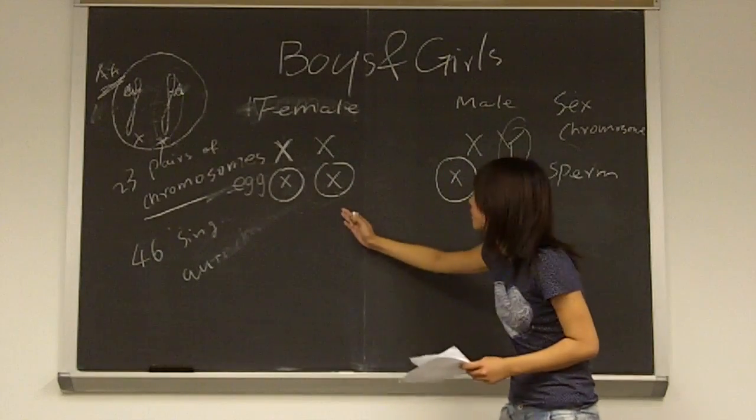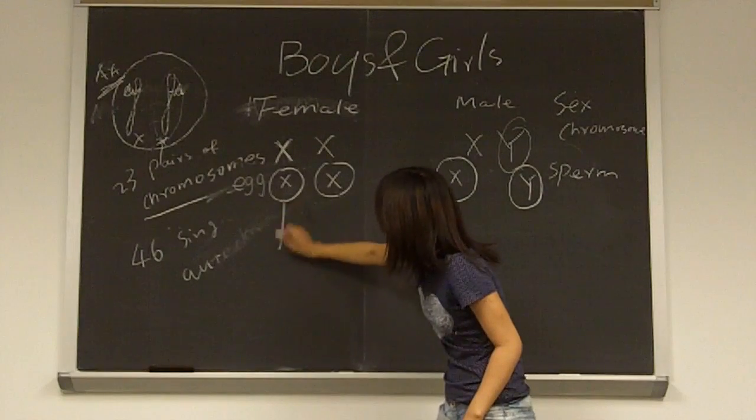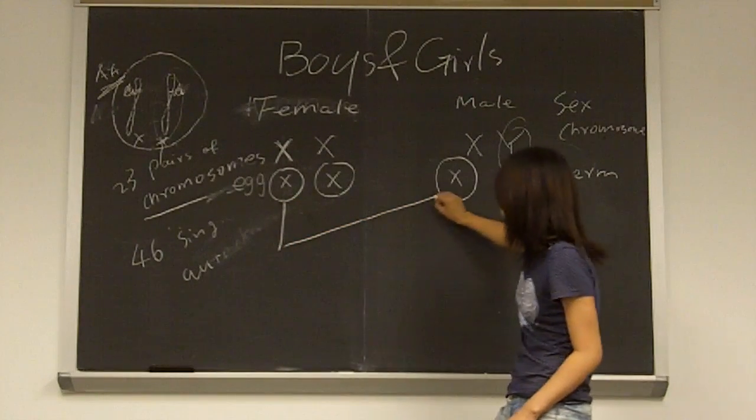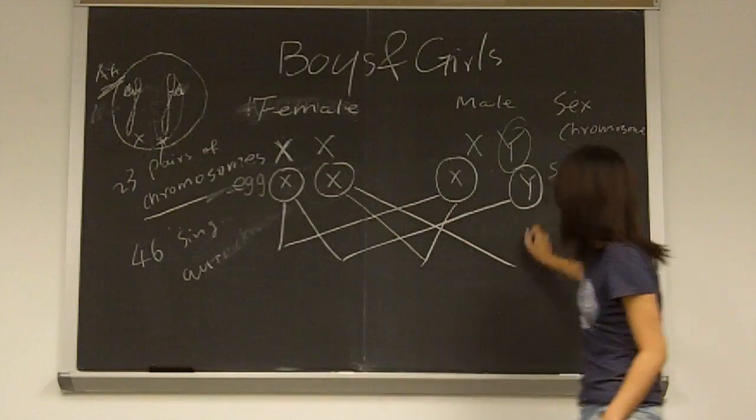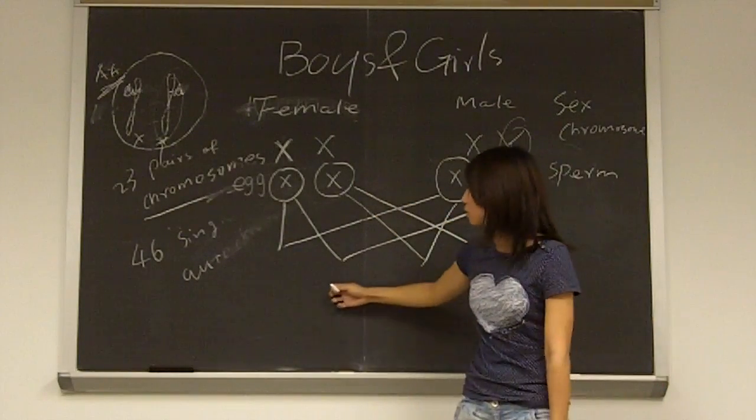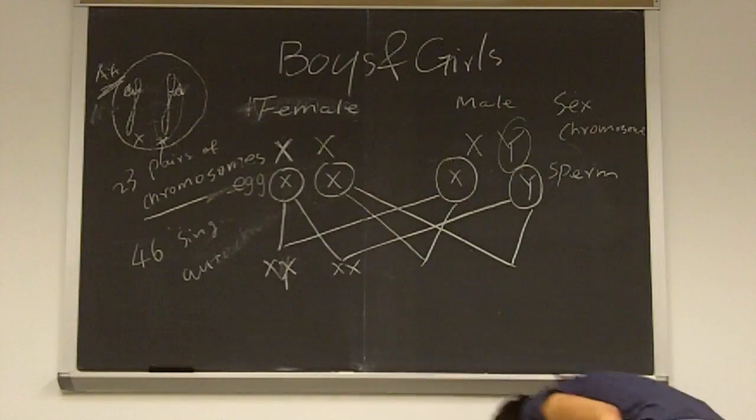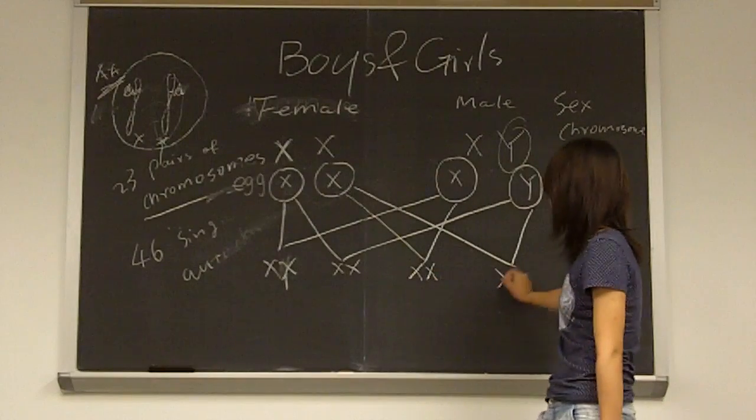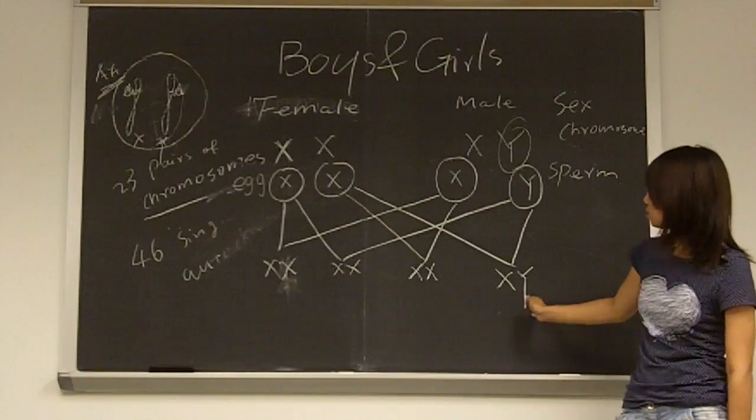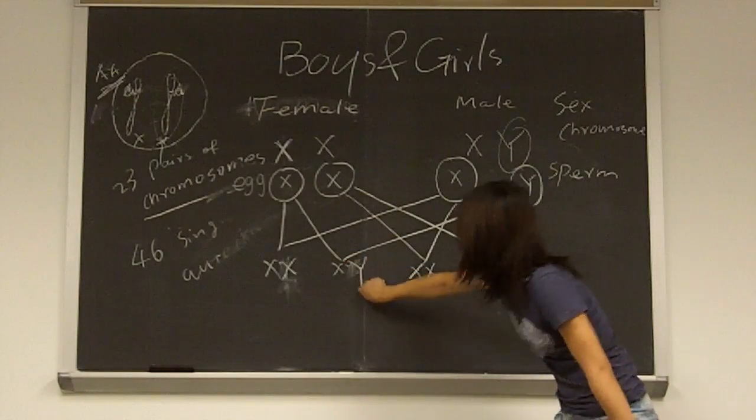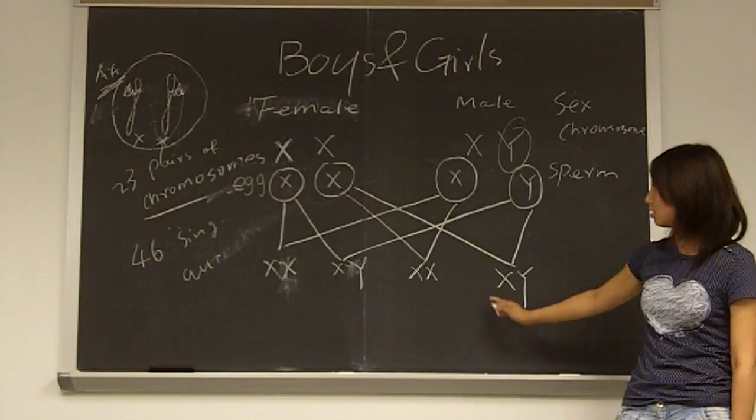So during the fertilization process, you will have a chance to get this one or this one or this one. So it will give us two types of differences.